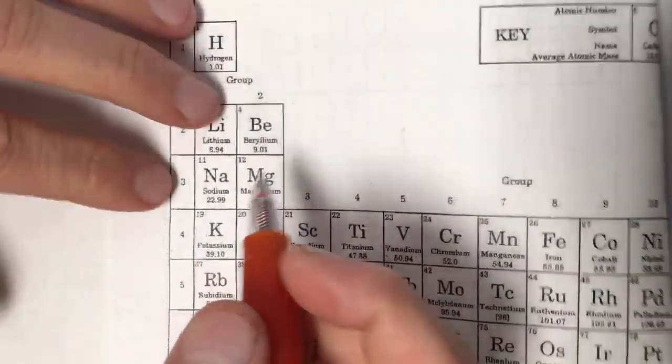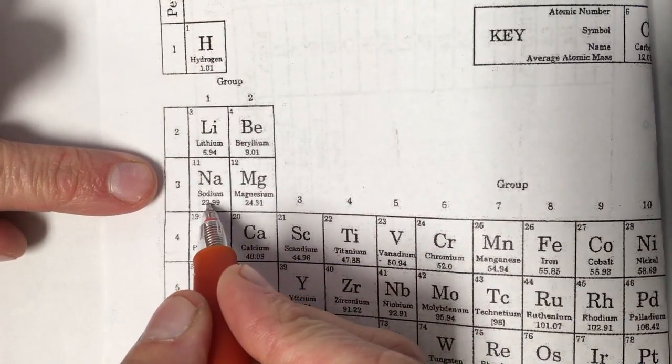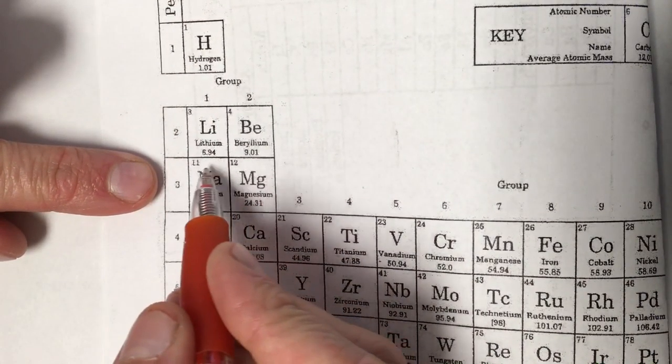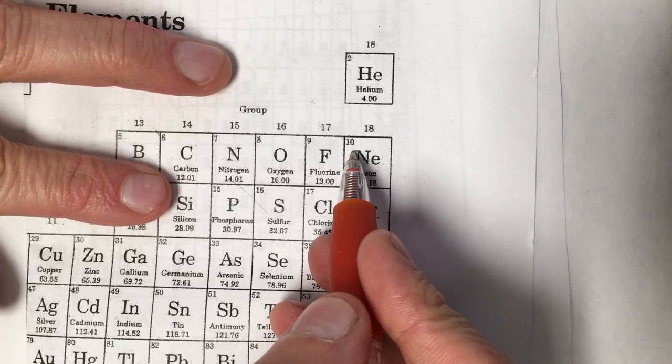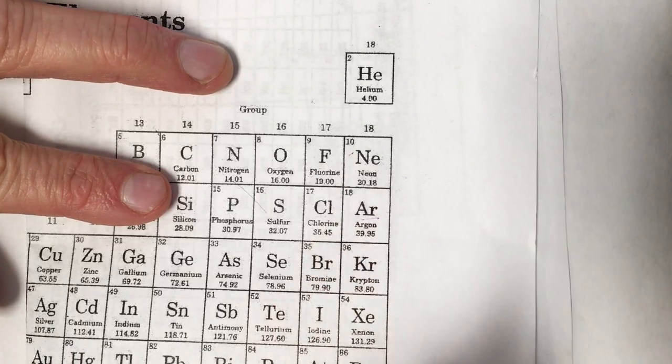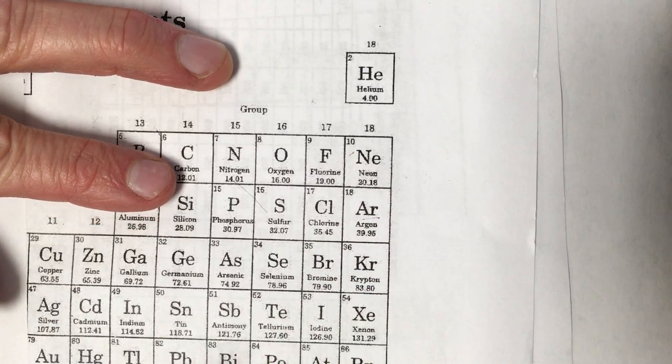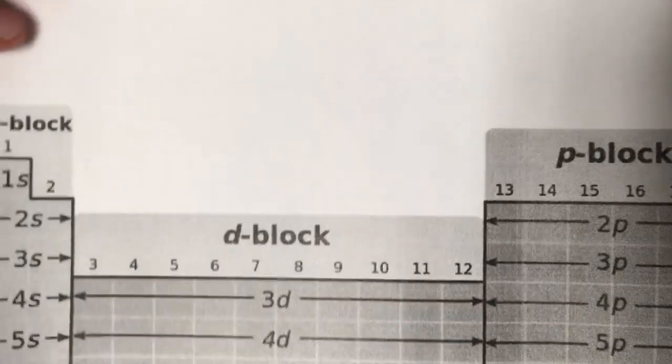The last type of electron configuration you have to write is one in a condensed or abbreviated form. This is where we relate that electron configuration to that of the noble gas that comes before it on the periodic table. It's always related to the noble gas that comes before it, so we always have to go backwards on the periodic table to figure out what that is.